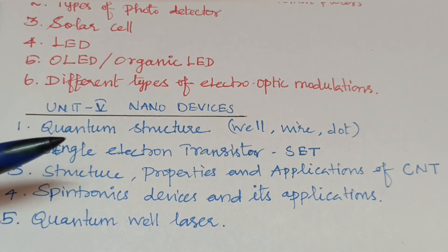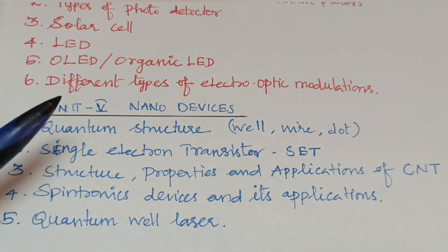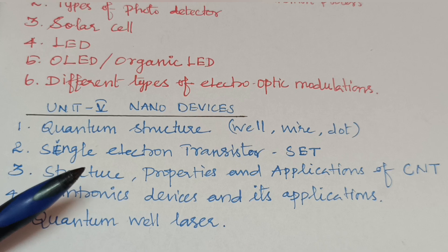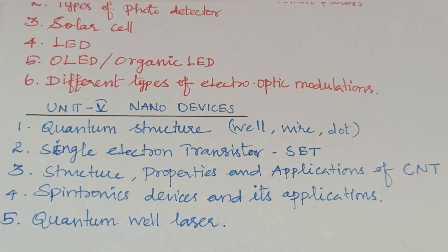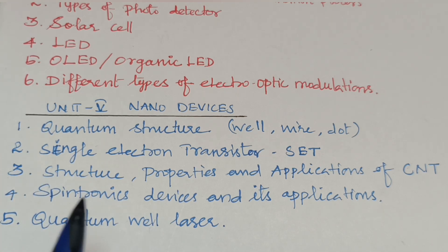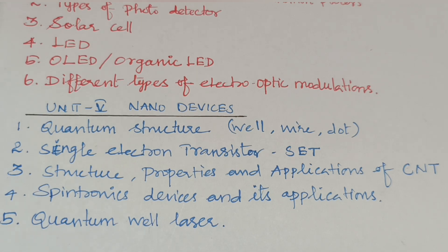In the fifth unit, the important topics include quantum structures — quantum well, quantum dot, and quantum wire. The second question is Single Electron Transistor, which is the most important question in Unit 5. Also important are CNT (Carbon Nanotube) structural properties and applications — there are three types of structures: zigzag, spiral (chiral), and armchair. Spintronic devices and their applications are also covered.